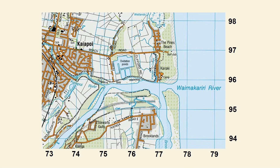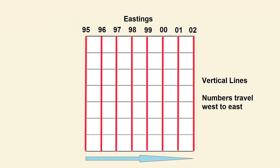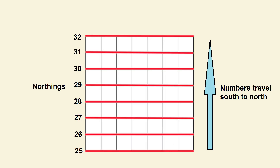Topographic maps have a grid of lines drawn on them. You can see the lines — some horizontal, some vertical — and each line has a number corresponding to it. The vertical lines are called eastings, because they travel from west to east. The horizontal lines are called northings, because they travel from south to north.